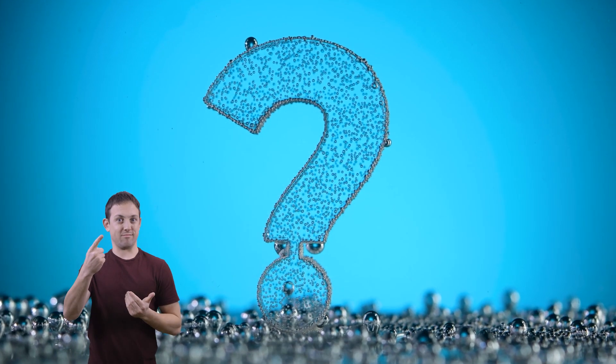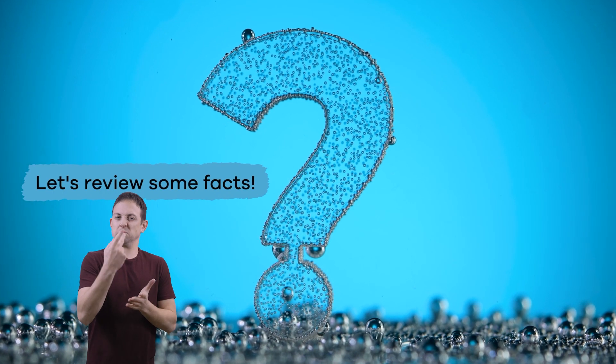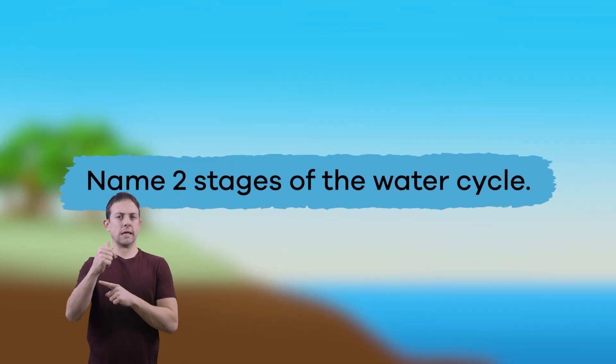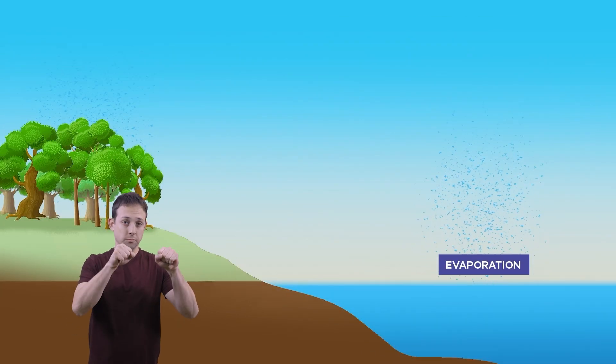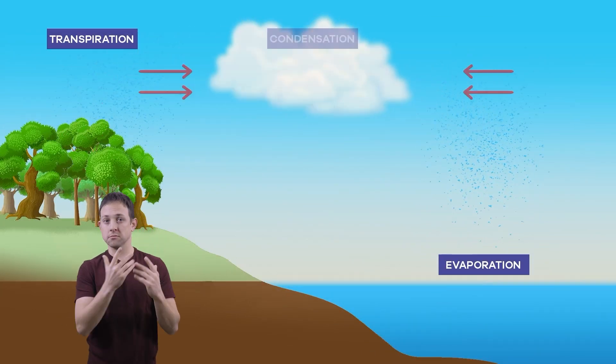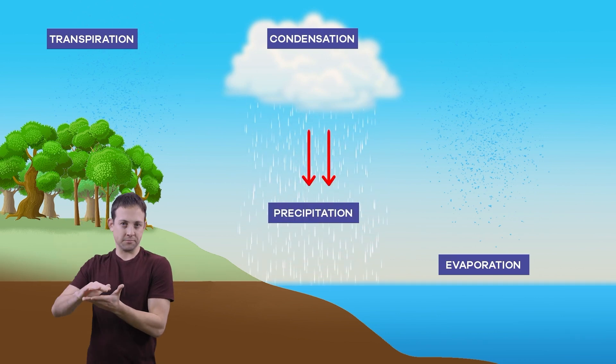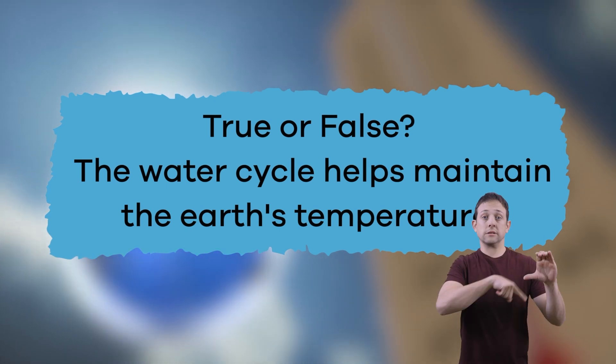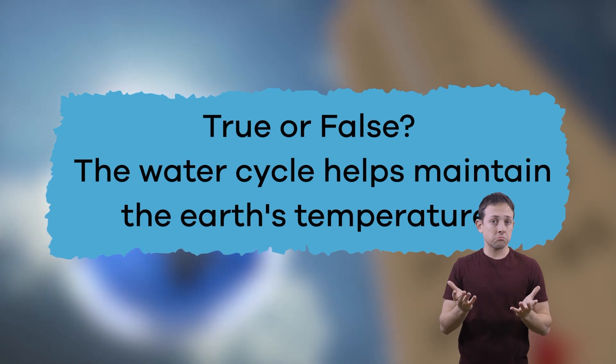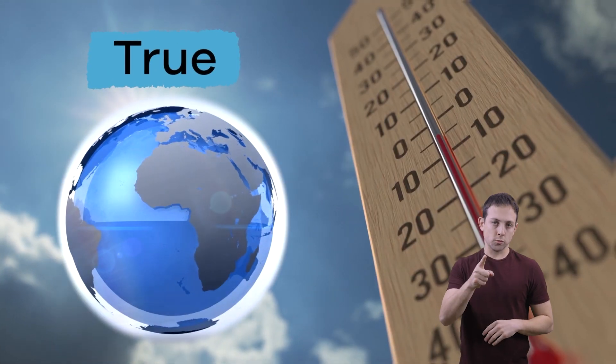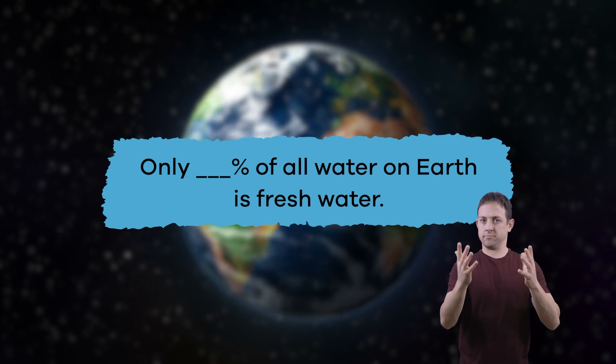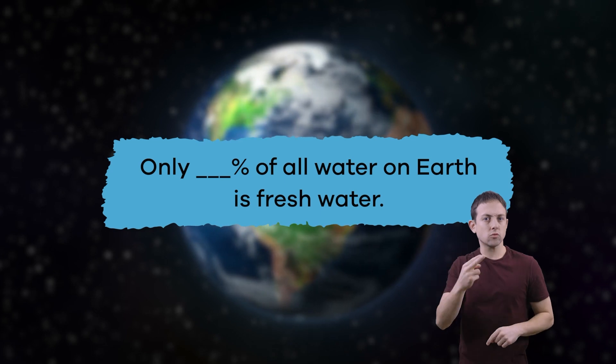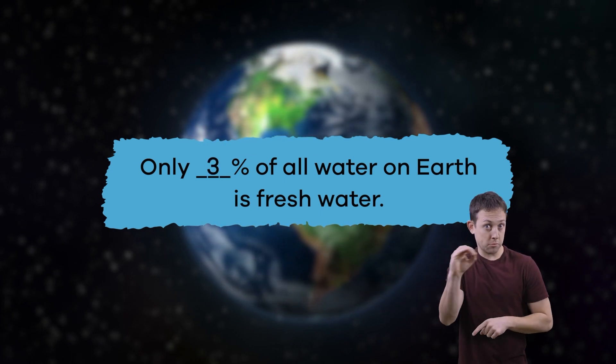Now that we have learned about the water cycle, let's go ahead and review some facts. Name two stages of the water cycle. Evaporation, transpiration, condensation, precipitation. True or false? The water cycle helps maintain the earth's temperature. That is true. Fill in the blank. Only blank percent of all water on earth is freshwater. Did you remember it was 3%?